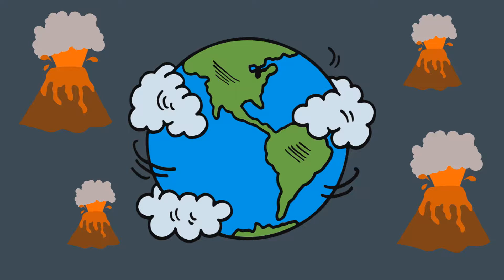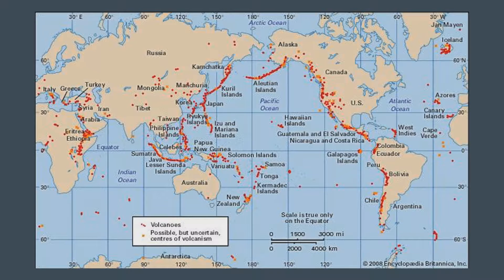Volcanoes can form anywhere the Earth's crust allows magma to reach the surface. Typically, this occurs around plate boundaries, either where plates are pulling apart or where one is forcing its way under another. From these pictures, there are around 1,510 active volcanoes around the world, and we currently know that there are 80 or more under the ocean that we haven't yet discovered.